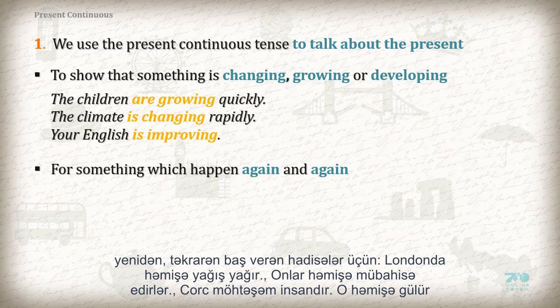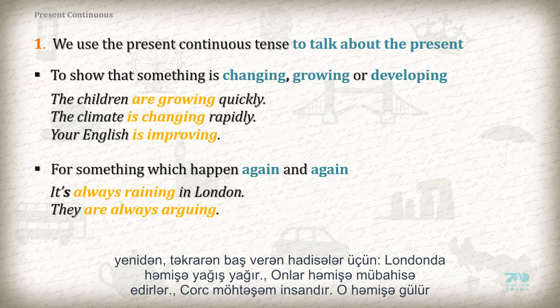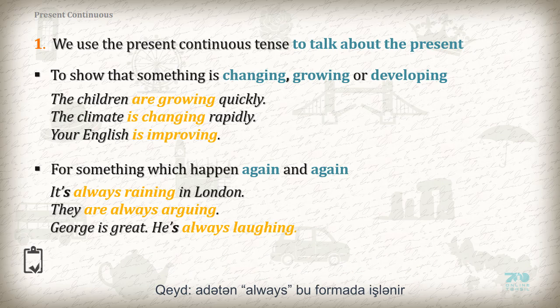For something which happened again and again: 'It's always raining in London.' 'They are always arguing.' 'George is great. He is always laughing.' Note: we normally use 'always' with this use.